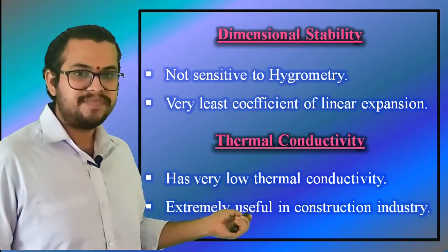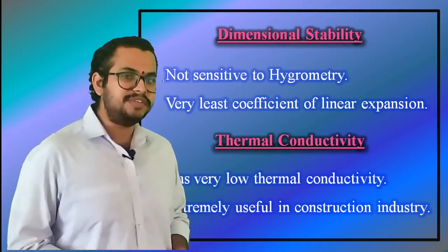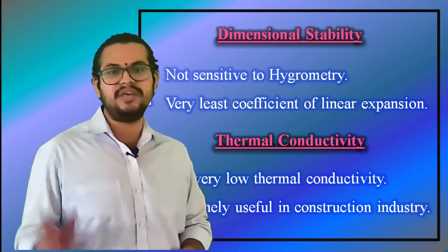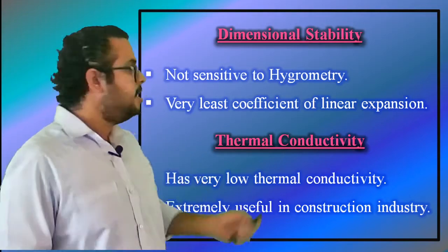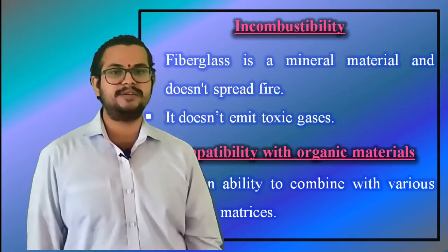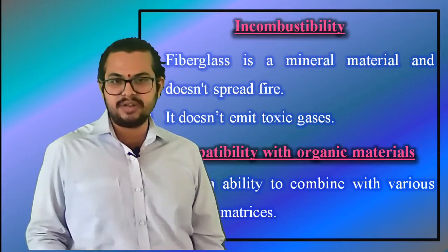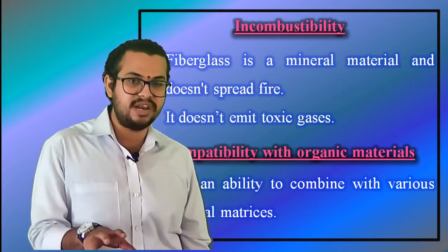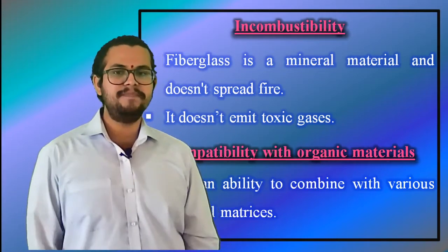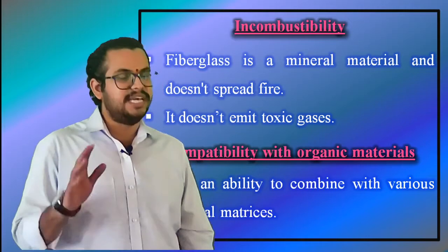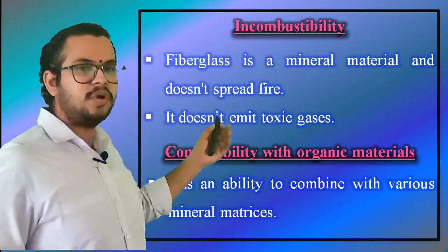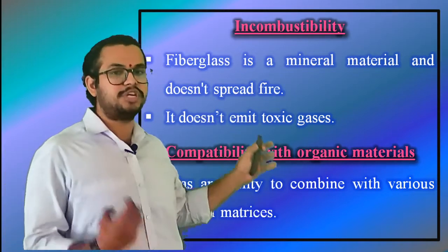Thermal conductivity: the thermal conductivity of fiberglass is very low, which makes it a very useful material in the construction industry. Incombustibility: as a mineral material, fiberglass is incombustible — it does not support or propagate flame, and it does not emit toxic substances or smoke even upon exposure to heat.